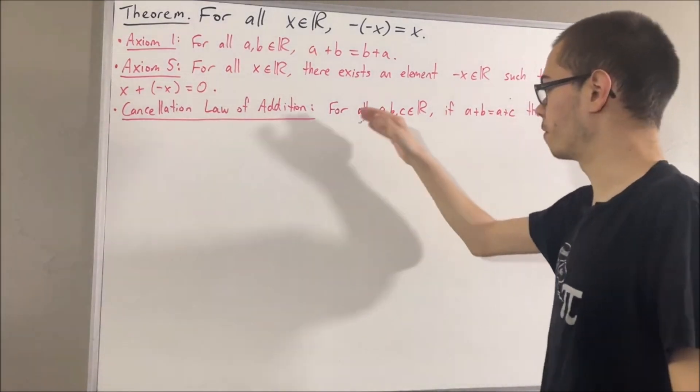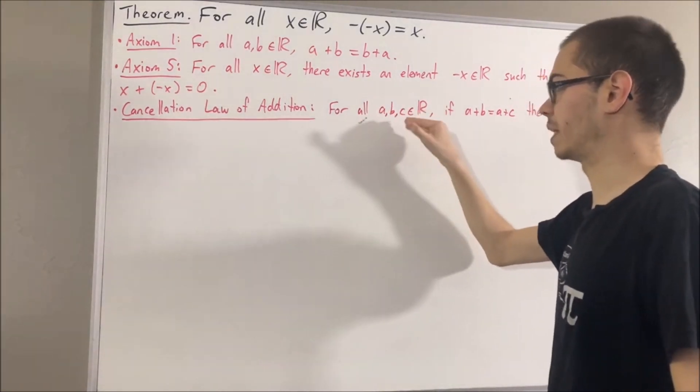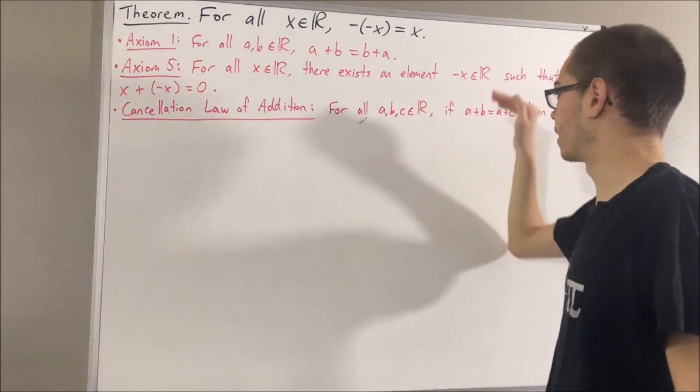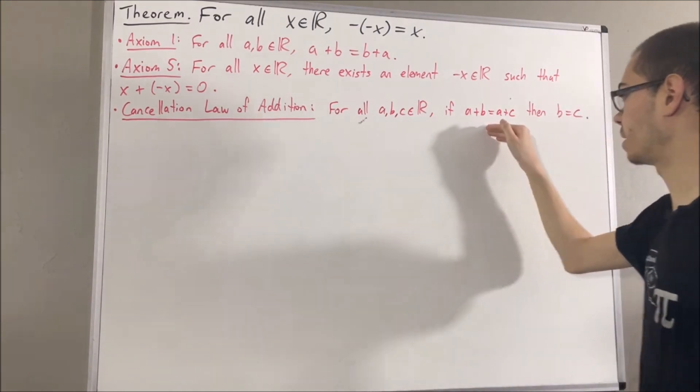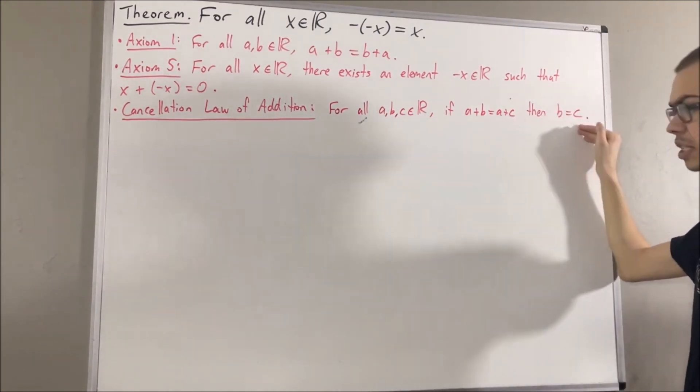We have proven that for all real numbers a, b, and c, if a plus b equals a plus c, then b is equal to c.